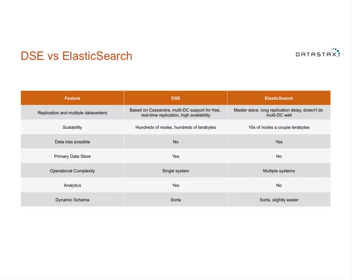With DSE, you put a little more thought up front but get a more performant system out of the box. Because DSE is reliable, it acts as your system of record — a single system for all your data. Elasticsearch is only good for search, requiring a separate primary data store and analytics store, whereas all of those come together bundled with DSE.